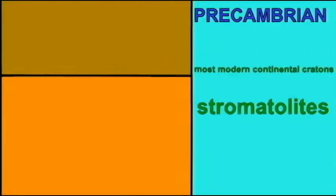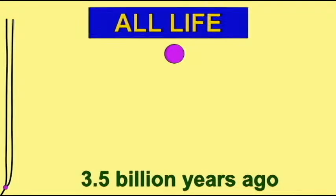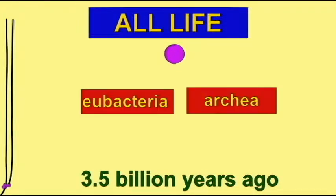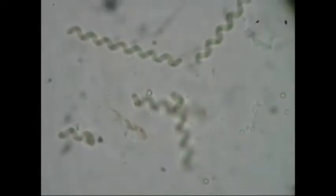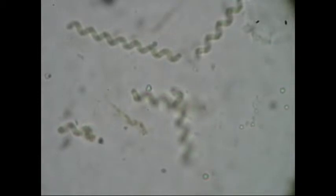The fossil record depicts the following story for the history of life on Earth. At first, there is no record of anything living on planet Earth — as far as we can tell, Earth was a dead planet. When there was finally life, the only living things were prokaryotic cells, the simplest life.